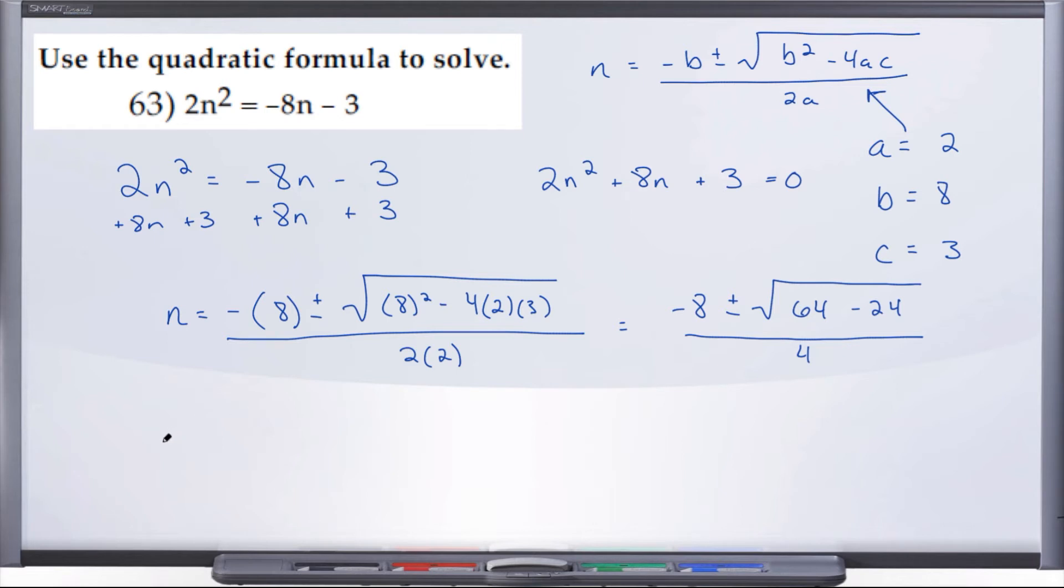So now we have, continuing on, -8 ± √(64 - 24), which is going to give us 40, over 4. And we'll keep simplifying here. We're going to have -8 ± ...